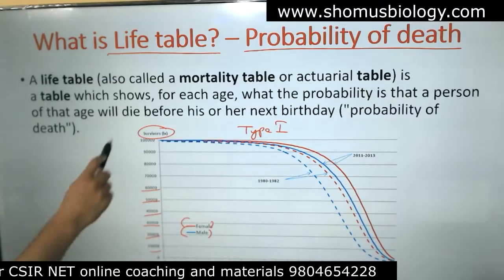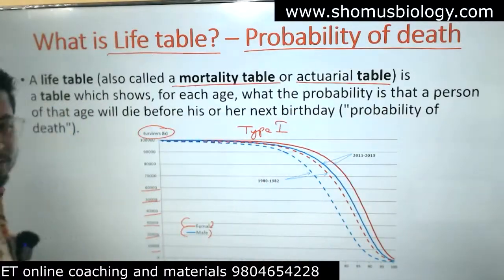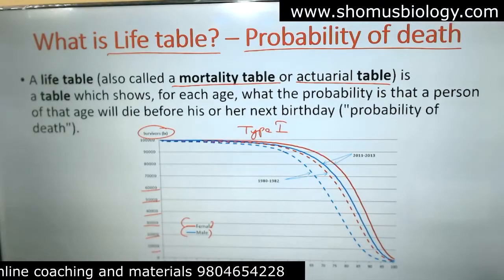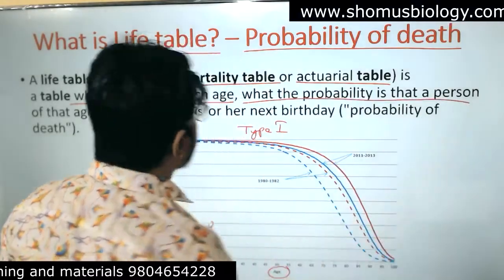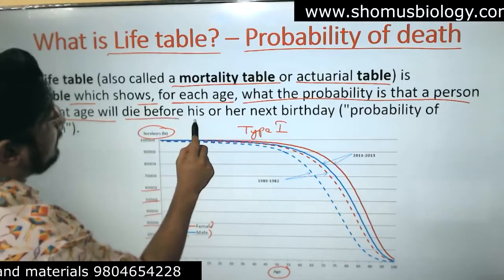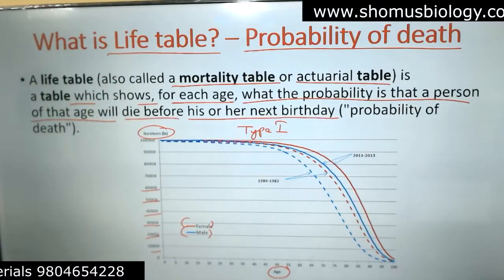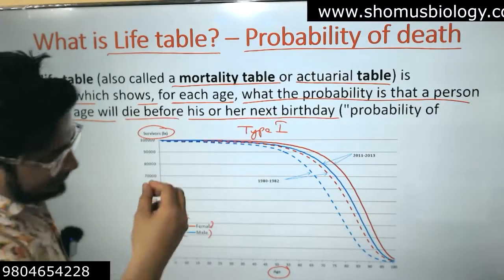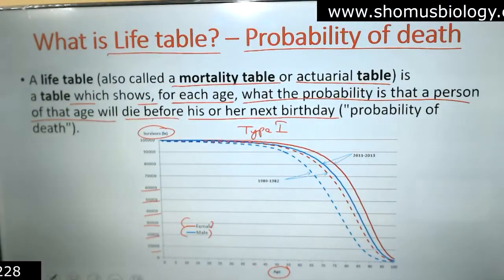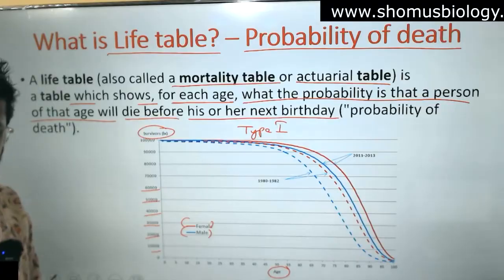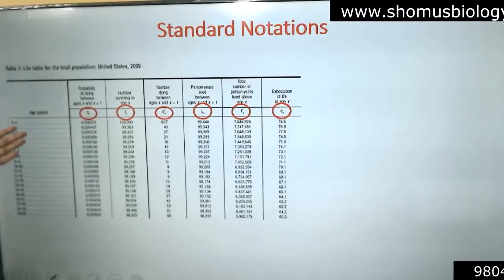A life table is also known as a mortality table or actuarial table. It is a table which shows, for each age, what is the probability that a person of that age will die before his or her next birthday. So basically, if your age is 30 now, what is the chance you will survive to 31, or to 32? That probability is calculated from the life table.